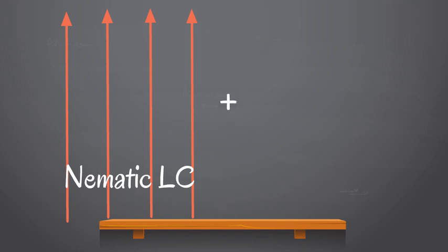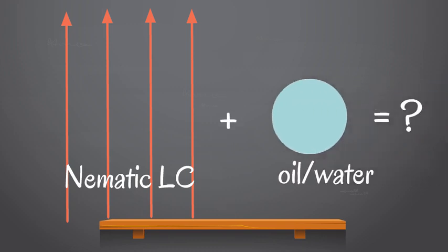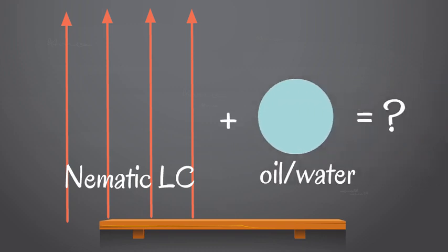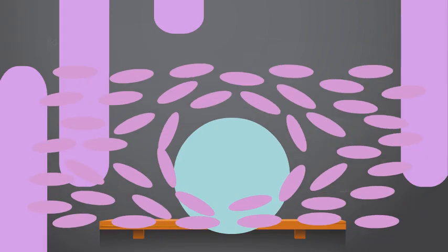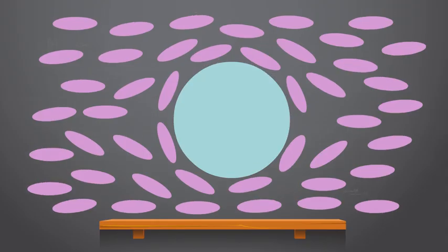Instead of making an emulsion with oil and water, two isotropic fluids, wouldn't it be much more exciting to see what happens with a nematic liquid crystal mixed with an isotropic fluid? We've tried that in the lab, and I can show you exactly what happens. If we zoom in to a singular droplet of water inside 5CB, we can see the rods aligning parallel to the surface. What we can see here is planar anchoring.